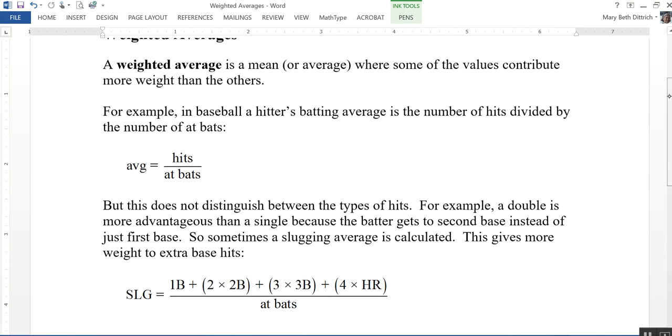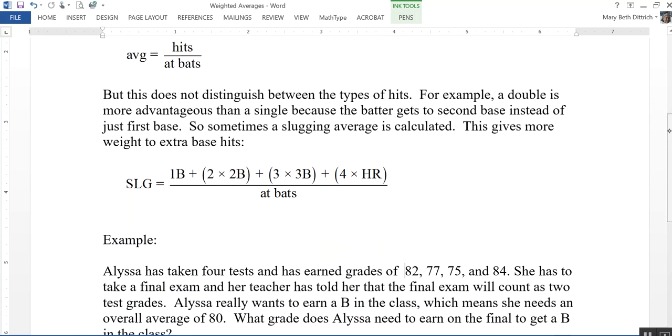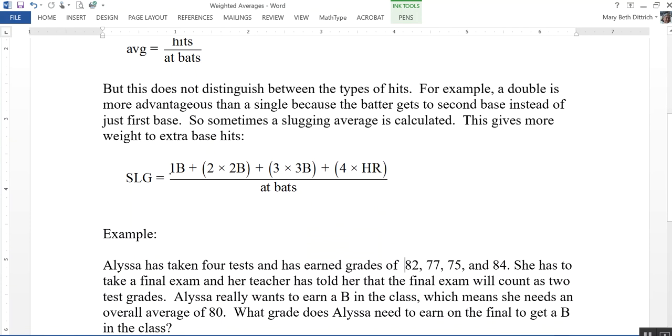So the way they calculate slugging percentage is like this. Slugging percentage is equal to the number of single-base hits, so the number of singles that you get, plus two times the number of doubles, 2B stands for doubles or two-base hits, plus three times the number of triples or three-base hits, plus four times the number of home runs.